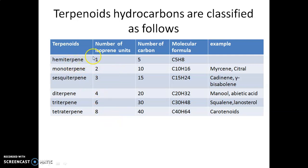If one isoprene unit is present, we call it a hemiterpene. One isoprene unit means it consists of 5 carbons and the molecular formula is C5H8. In nature, this isoprene unit is not available in a free state — it always couples with another isoprene unit to form the next category, monoterpenes. Monoterpenes consist of two isoprene units, with a carbon number of 10 and molecular formula C10H16, and their derivatives.